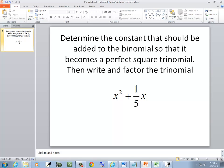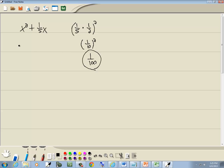They then want us to write and factor the trinomial, so we add that number. We got x squared plus one-fifth x plus one over a hundred, and then factor it. That factors as x plus one-tenth squared.